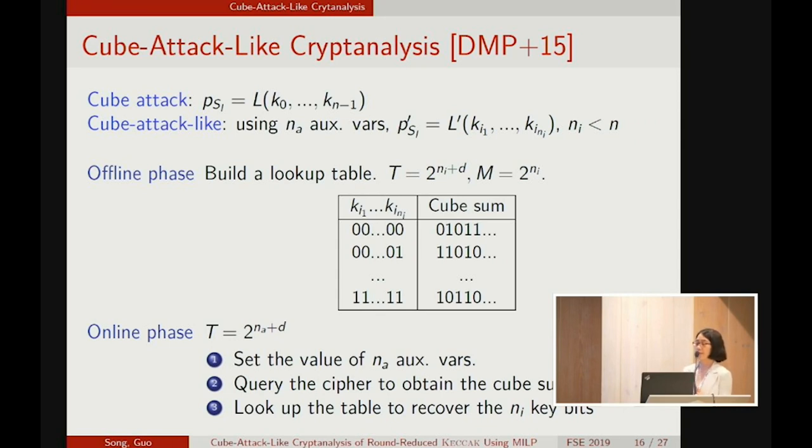A right guess of the nA auxiliary variables will lead to a hit in this table. In this way, the attacker can recover the nI key bits. The online phase takes a time complexity of 2^(nA+D). In this procedure, we can see that a good attack should have balanced parameters for nI and nA.